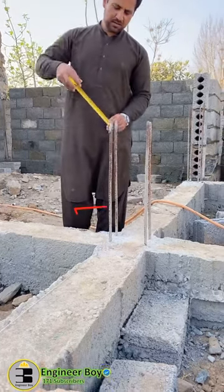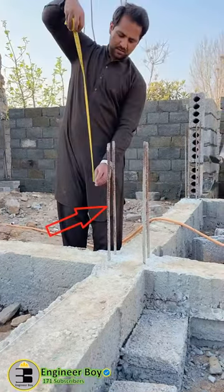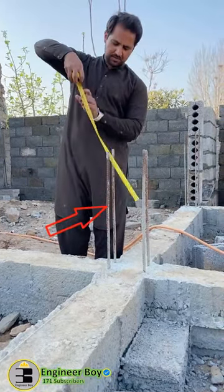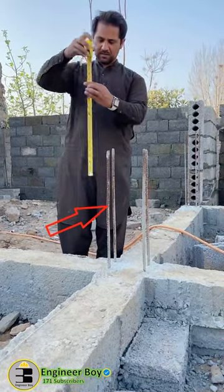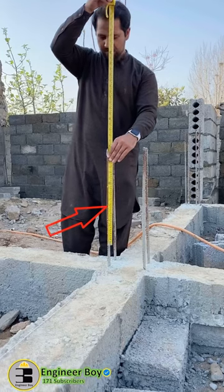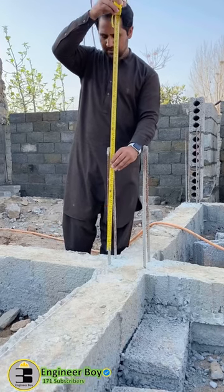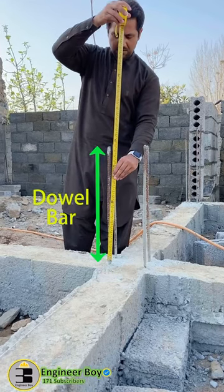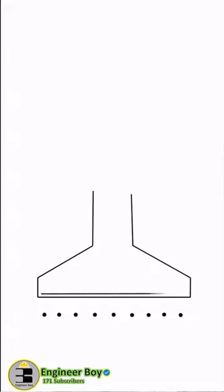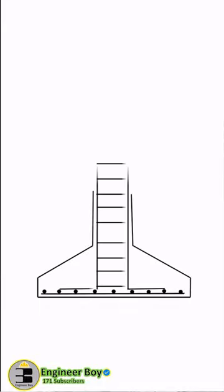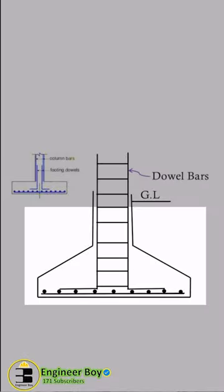Those steel bars are extended to a particular length for future extension of the member, which are commonly known as dowel bars. These bars are provided in concrete members to transfer the load from above structures to the footing or to the foundations.